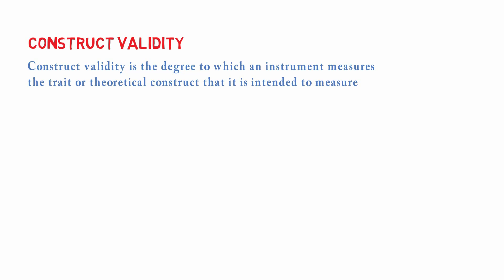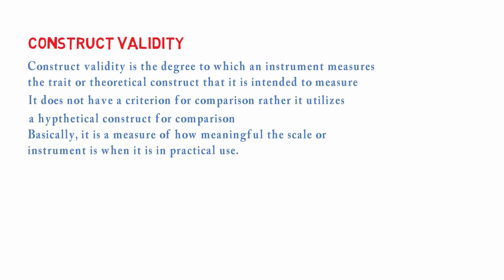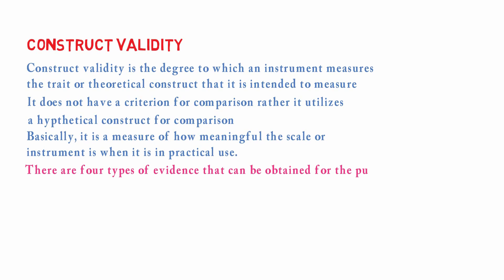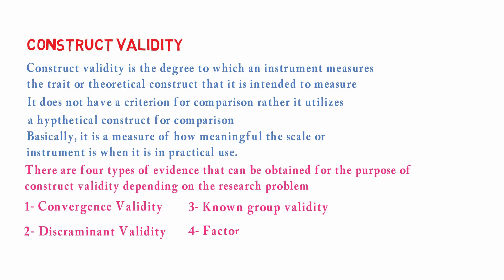Construct validity is the second major type of empirical validity. It is the degree to which an instrument measures the trait or theoretical construct that it is intended to measure. It doesn't have any criteria for comparison; rather, it utilizes a hypothetical construct for comparison. Basically, it measures how meaningful the scale or instrument is when it is in practical use.